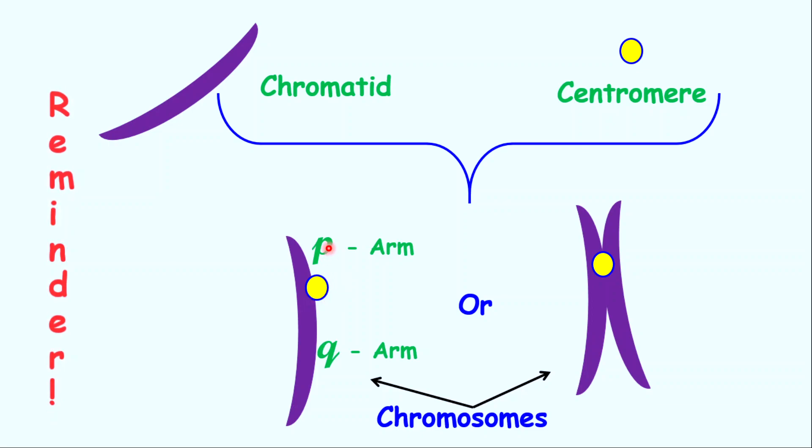The short arm, P arm, the long arm, Q arm. On this side on the right, you have one chromosome, two chromatids. Now remember that chromosomes are counted based on the number of centromere.